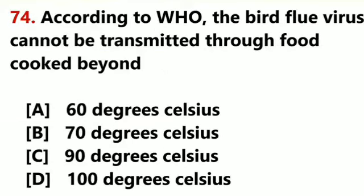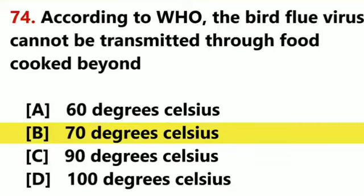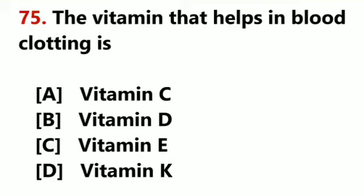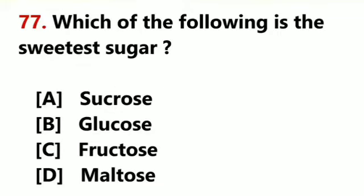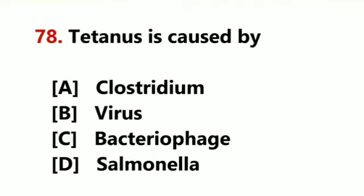According to WHO, the bird flu virus cannot be transmitted through food cooked beyond 70 degrees Celsius. The vitamin that helps in blood clotting is Vitamin K. Dinosaurs were reptiles that became extinct. Which of the following is the sweetest sugar? Fructose. Tetanus is caused by Clostridium.